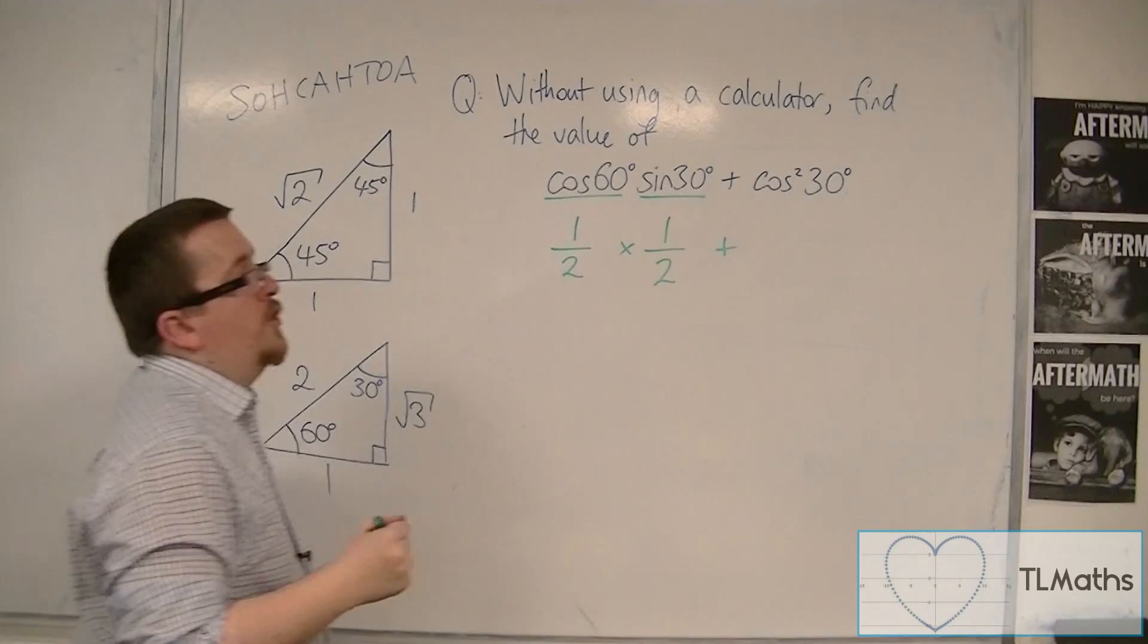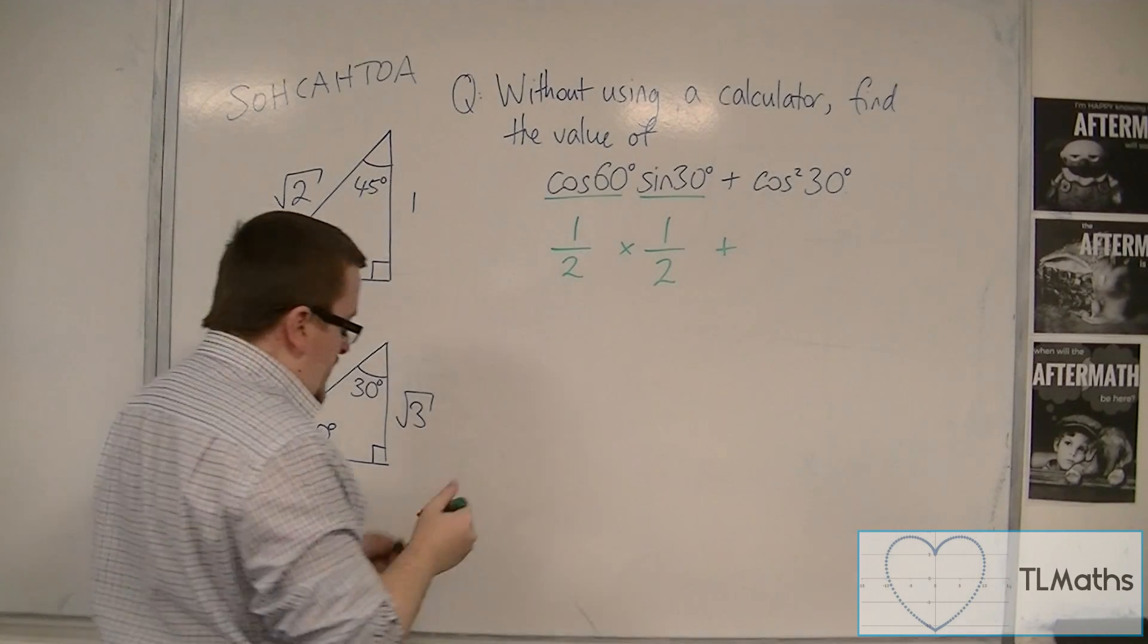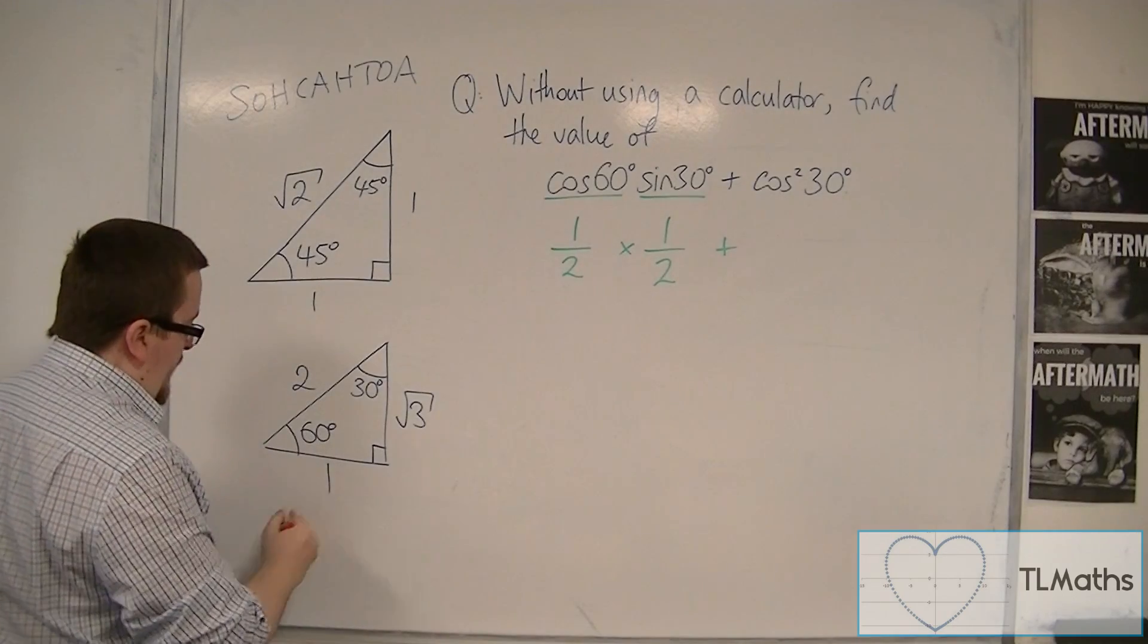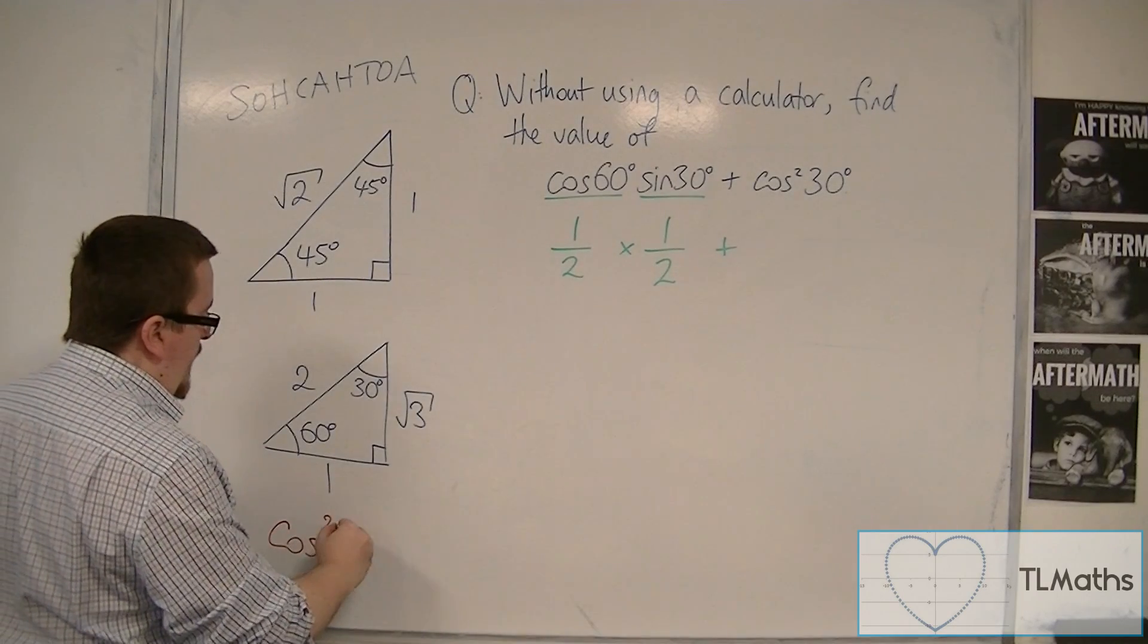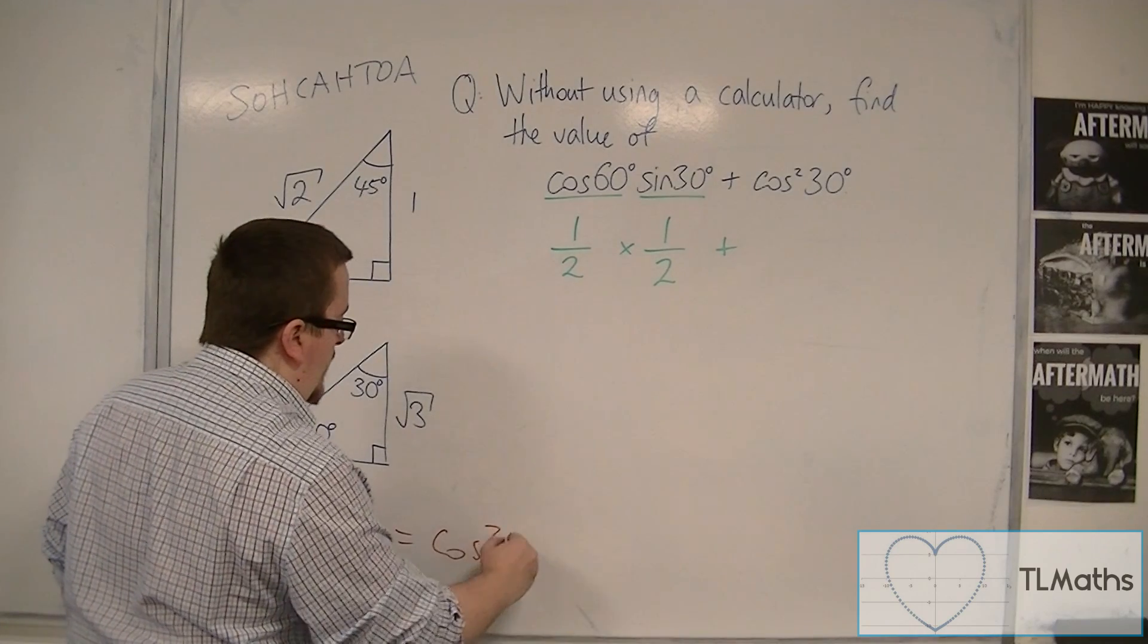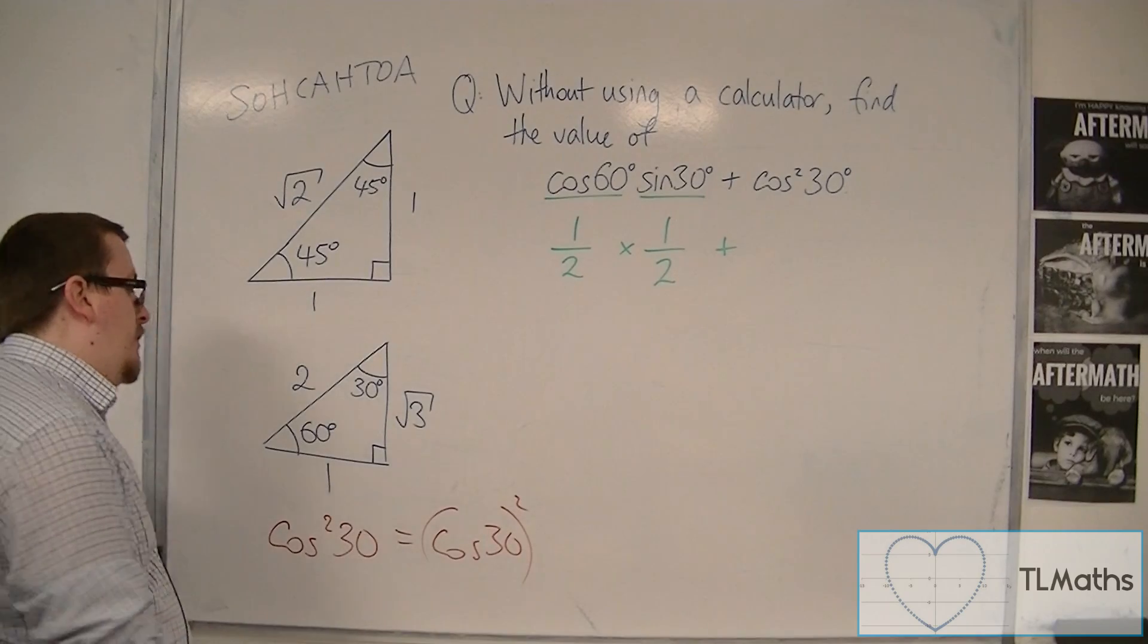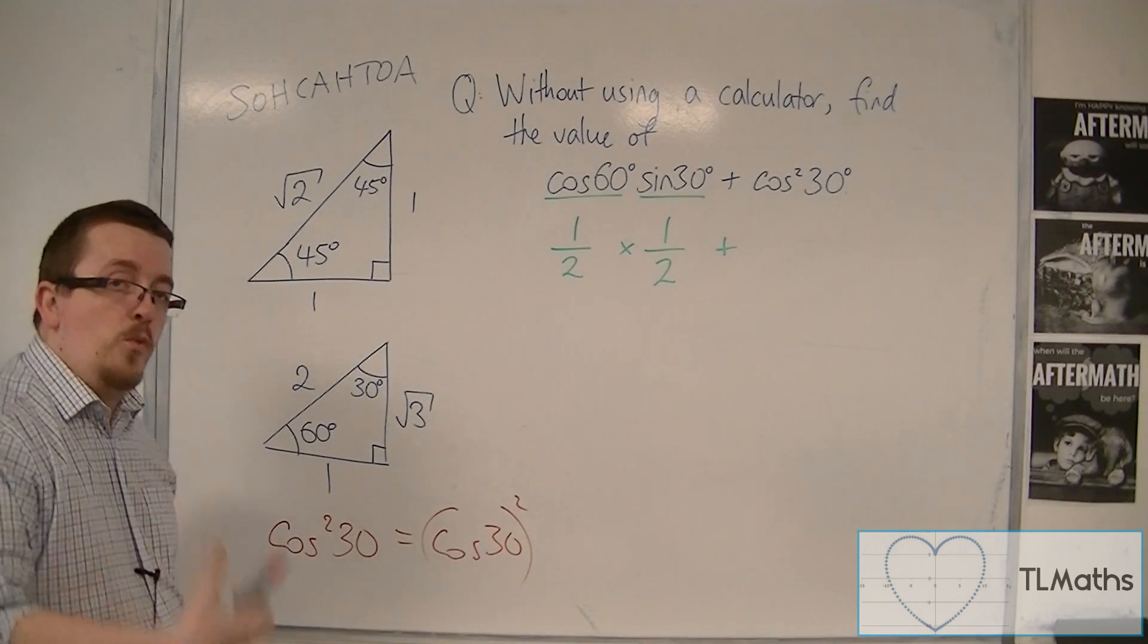Plus cos squared 30. Now, as a side note, it is important to note that cos squared of 30 means cos of 30 all squared. This is the notation that is used to square cosine.